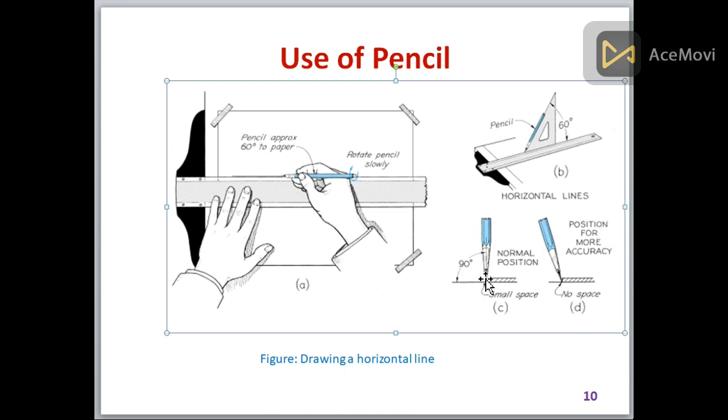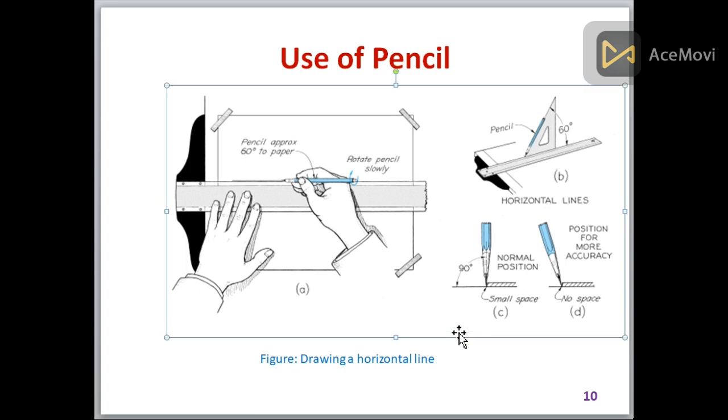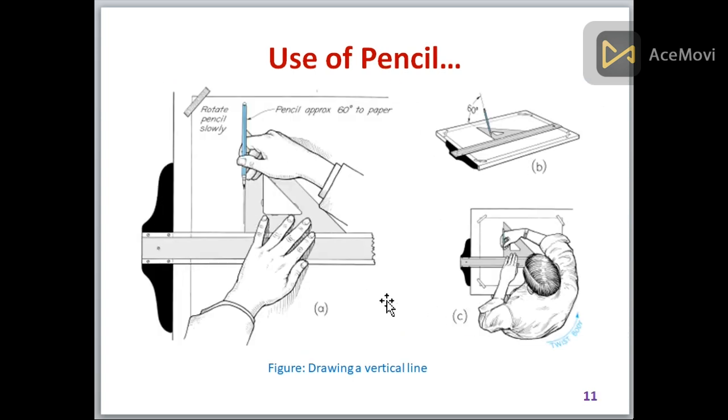Never make the pencil exactly normal or greater than 90 degrees. This is not correct. If you are moving upward, then tilt the pencil 60 degrees in the above direction like this, and this is the position.